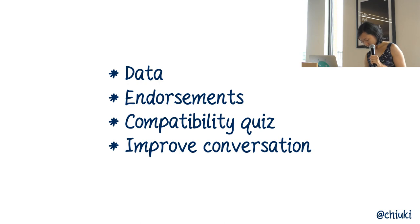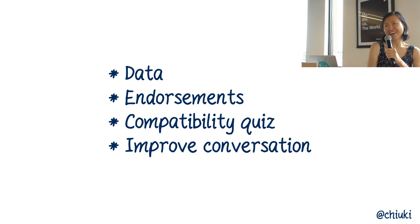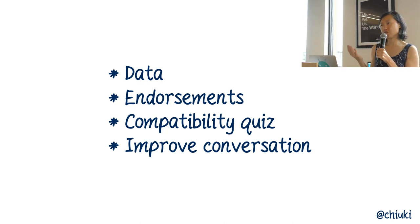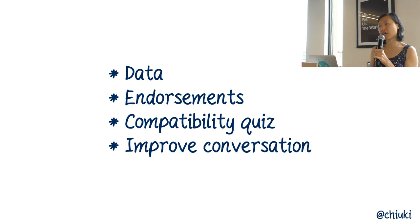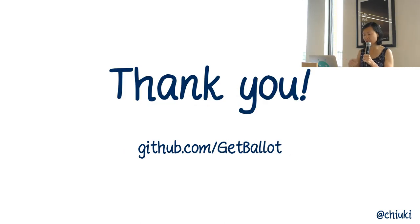Another thing I want to improve is the Google Home conversation flow — it's a bit forced right now. I just want it to work, so it's very mechanical. I want to make it flow better because I think Google Home can reach people who wouldn't normally use a phone to get this information. If I can just have them ask conversationally when their next election is and where to vote, even without endorsement or compatibility quiz features, that's still a good service.